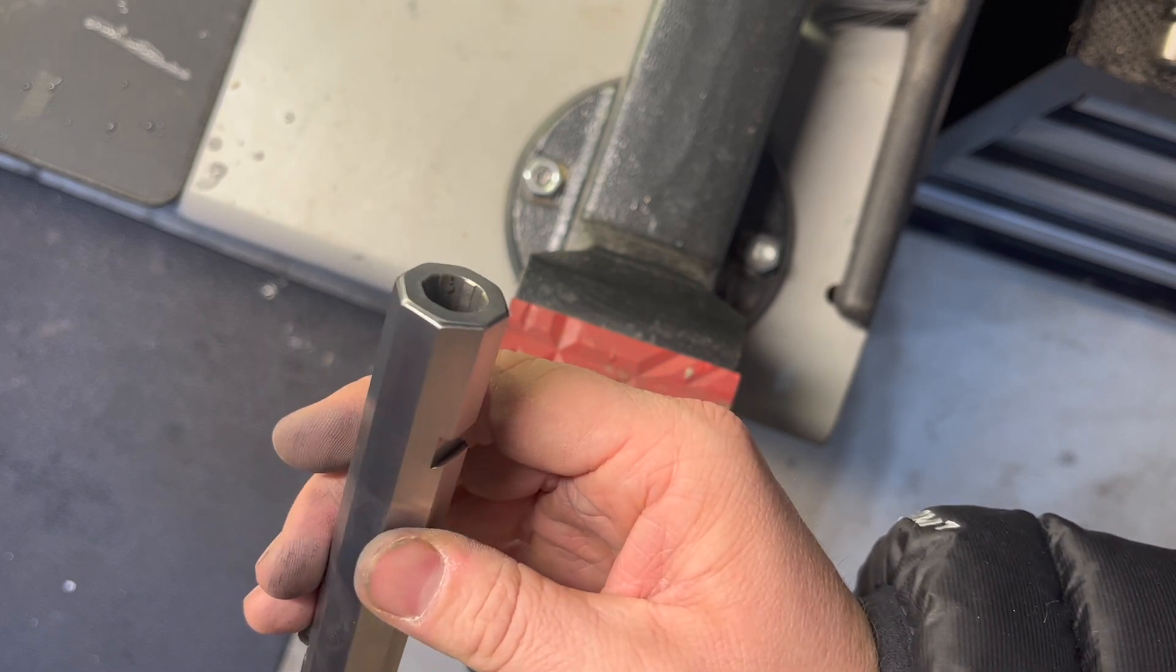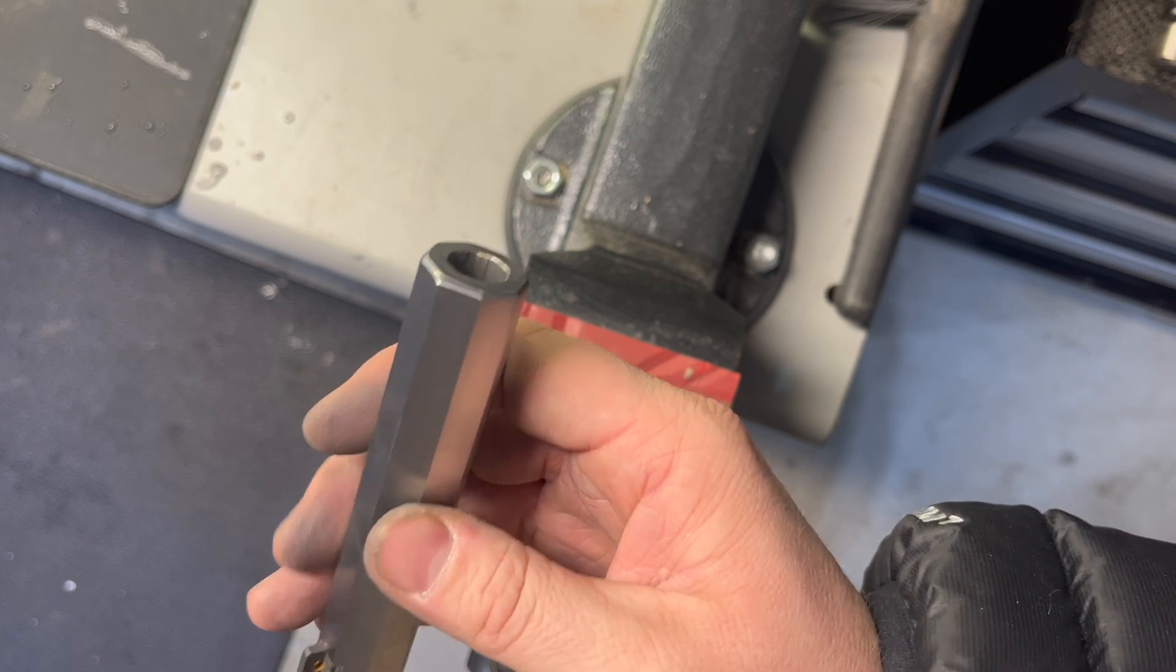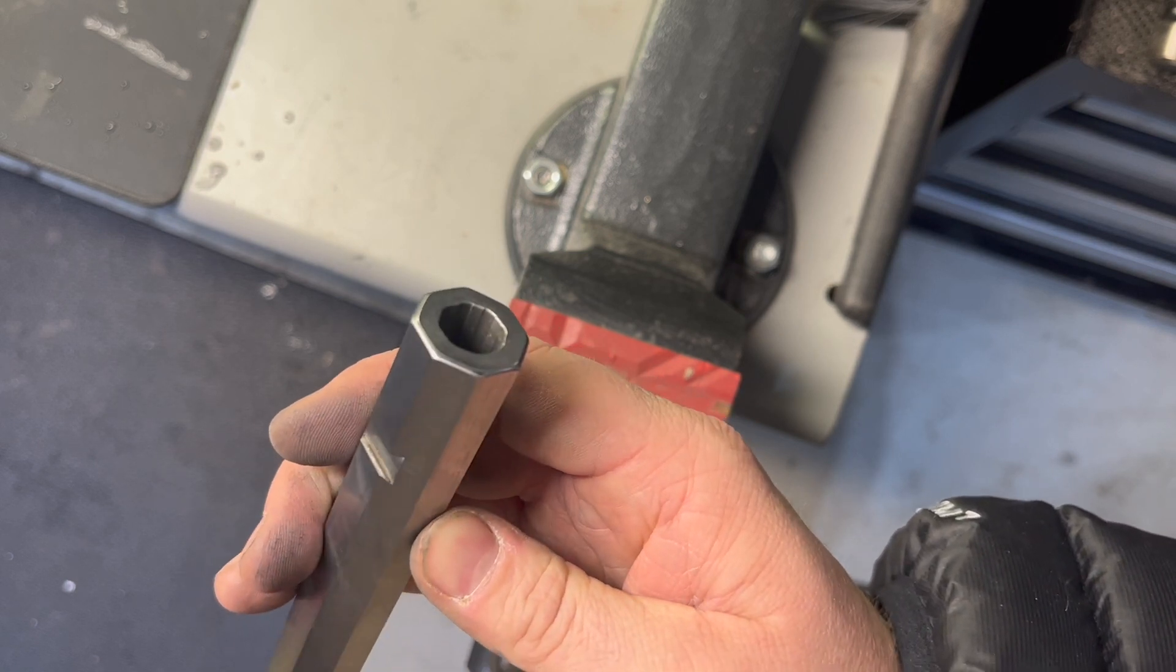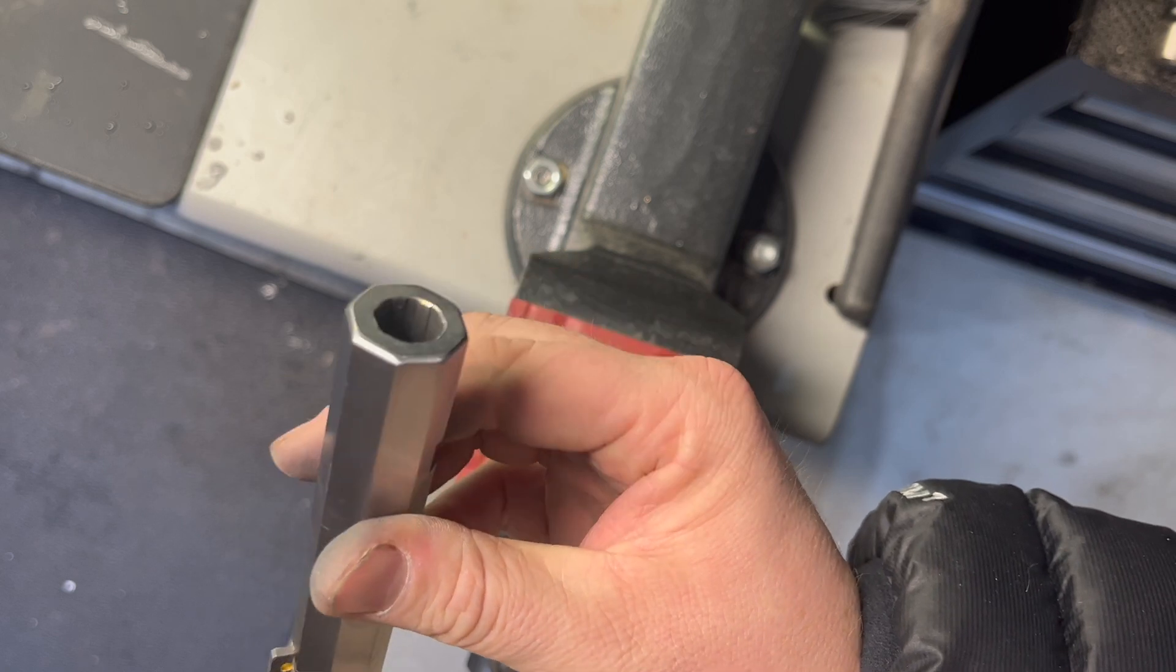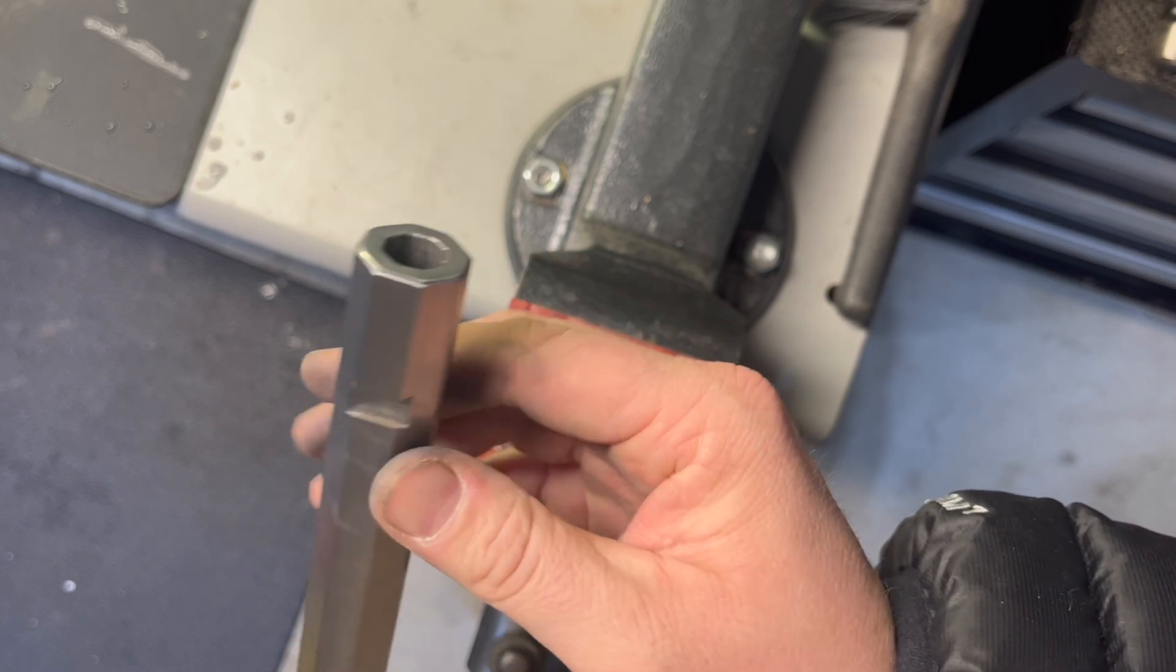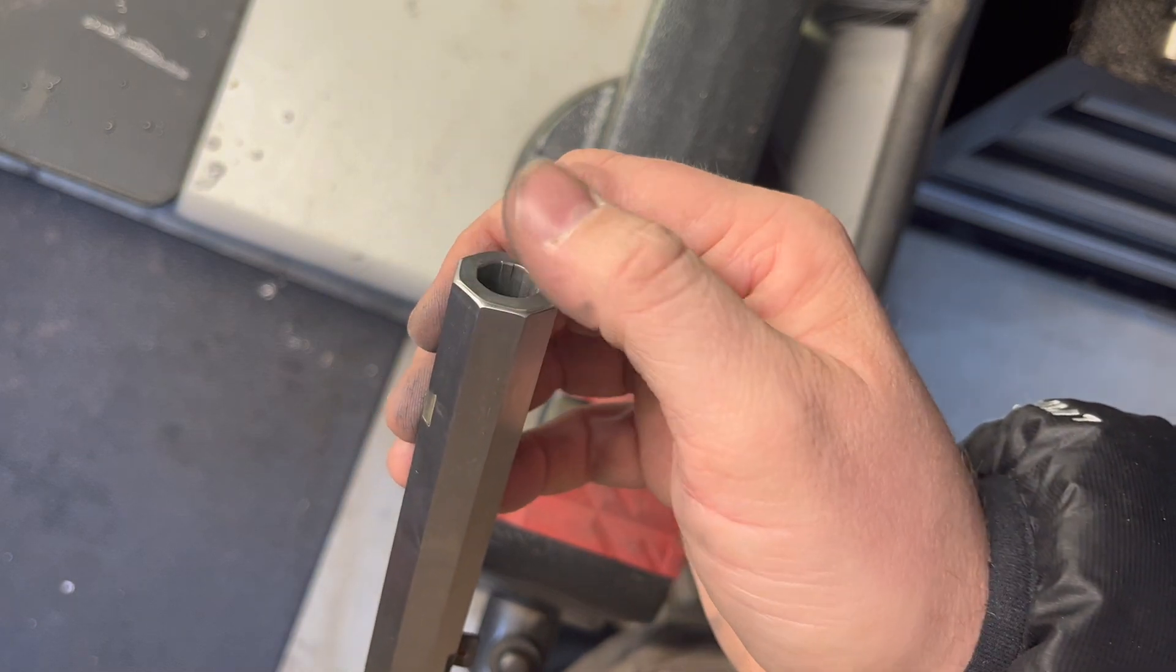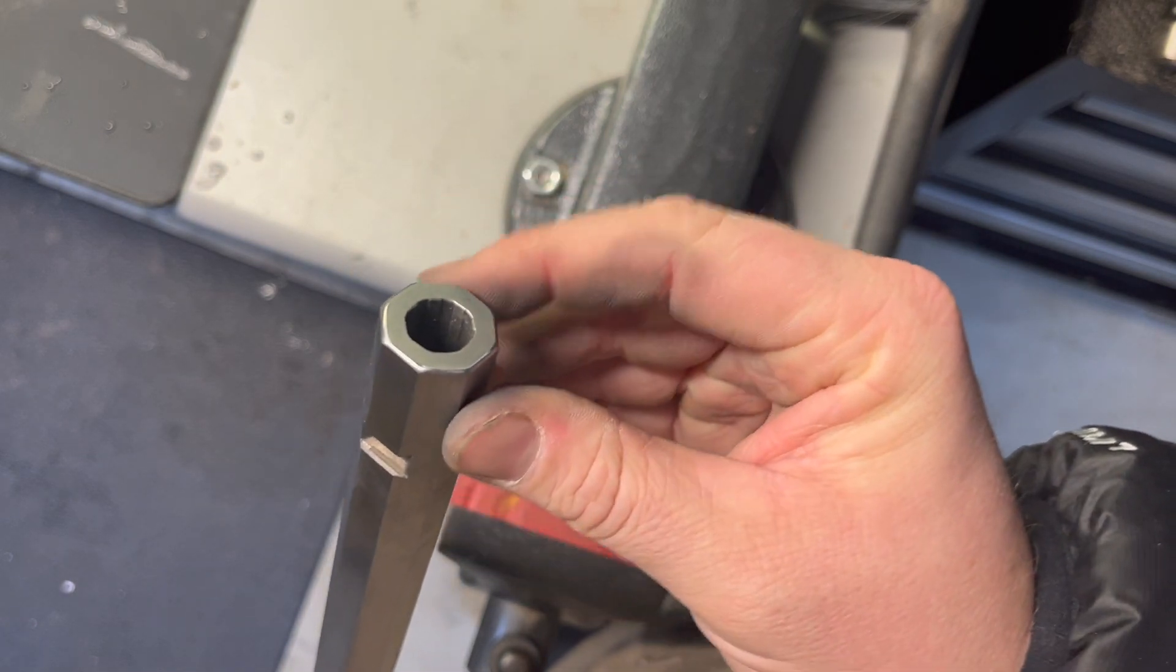You can see on the outside, I like it pretty well polished. I used a 2000 grit belt on my little 1 inch by 30 inch belt grinder.